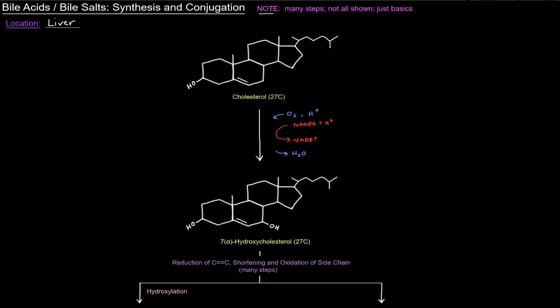We saw previously that bile acids and bile salts have the steroid nucleus with the A, B, C, and D rings — they are basically sterols or steroids. They come from the steroid precursor, which is cholesterol. So we've got cholesterol here, and that's where we're going to start as far as making bile acids and eventually conjugating them to bile salts.